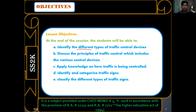You should also be able to discuss the principles of traffic control, which includes the various control devices. You should be able to apply knowledge on how traffic is being controlled, identify and categorize traffic signs, and classify the different types of traffic signs — whether informative, regulatory, or cautionary signs.